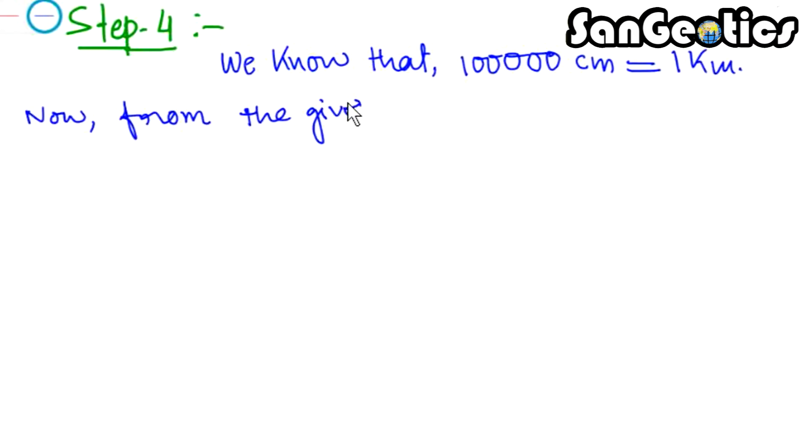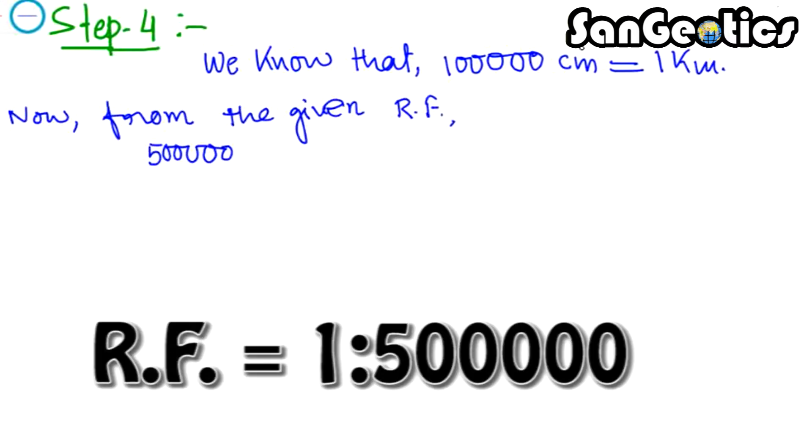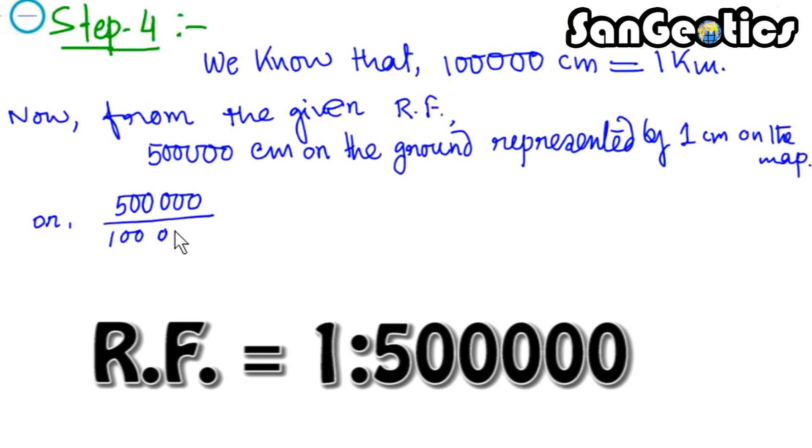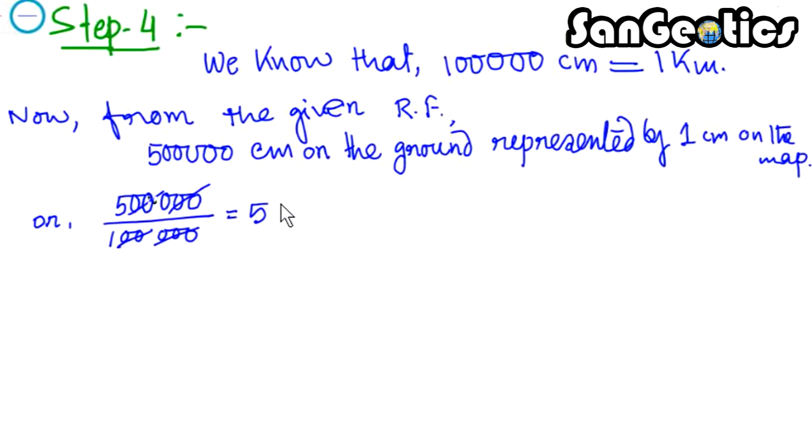Now, from the given RF, 500,000 cm on the ground represented by 1 cm on the map. Or, 500,000÷100,000 equals 5 km on the ground represented by 1 cm on the map.